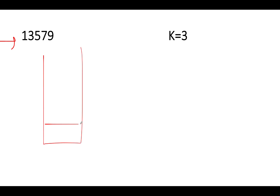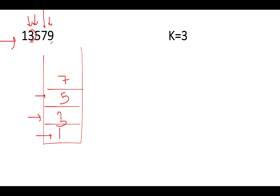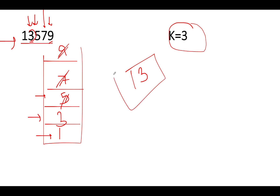Let's walk through one more interesting edge case: the input is 1, 3, 5, 7, 9 — a monotonically increasing sequence. Walking through the stack, each element is greater than the previous, so no deletions occur during iteration. We exhaust all elements but still have a remaining value of k. In such a case, you simply pop out the last k elements from the stack. So if k is 3, elements 9, 7, and 5 get deleted, leaving 1 and 3 as the result. This is a corner case that most people tend to forget.